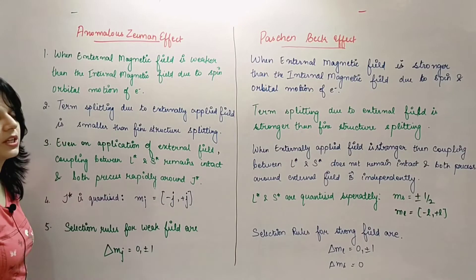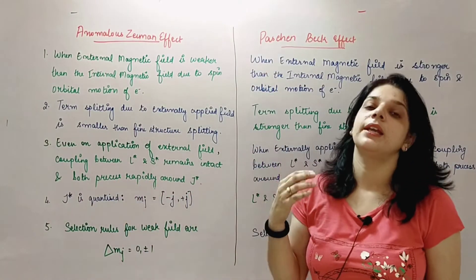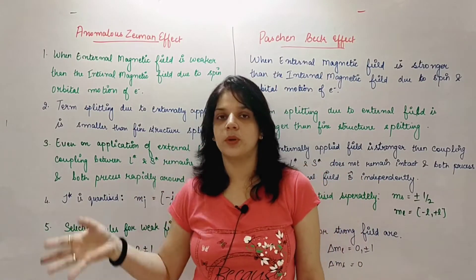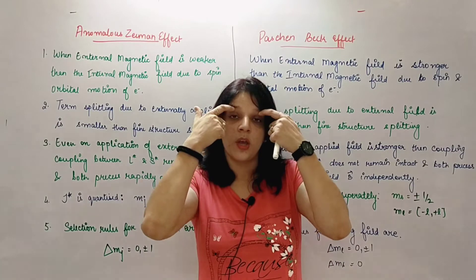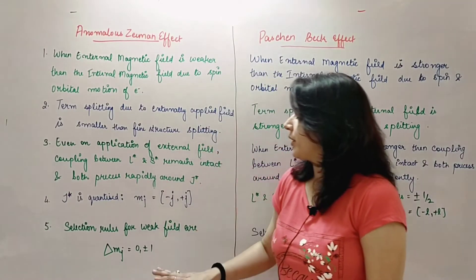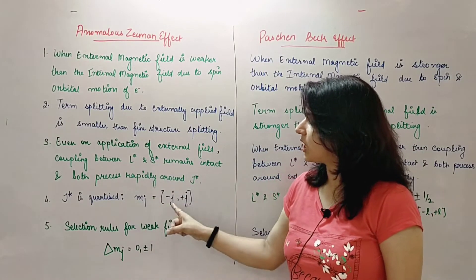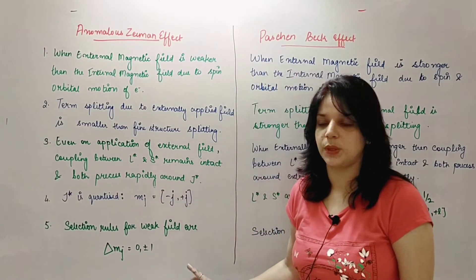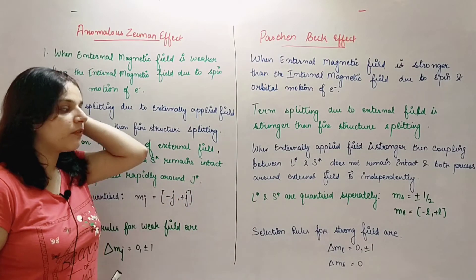In this case, when my externally applied field is weak, my selection rules - now what are selection rules? When my electron has to go from one orbit to another orbit, it should follow some selection rules, it cannot go beyond those. For example, if I have a child, the child can move around in the house, that is allowed, whereas going outside the house alone is not allowed. Similarly, these also have some selection rules. So when selection rules for weak field are applied, it means mj - LS coupling is intact, J is quantized, so due to coupling, my selection rules will also be in terms of mj. Those will be zero and plus minus one, only three differences or three changes in units are allowed.